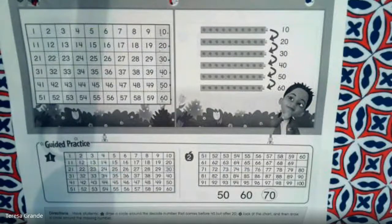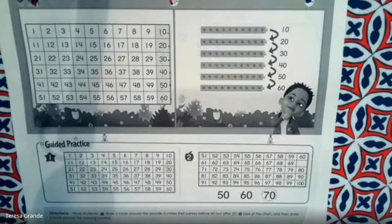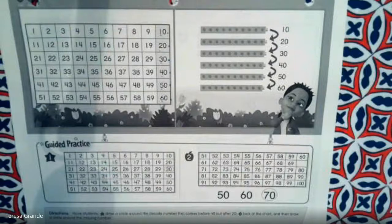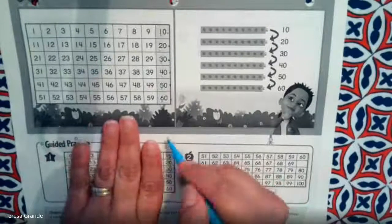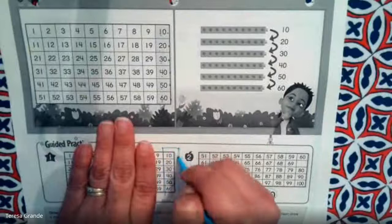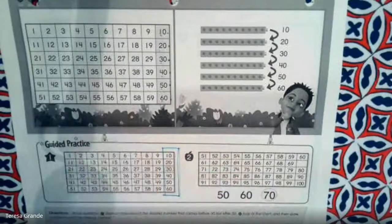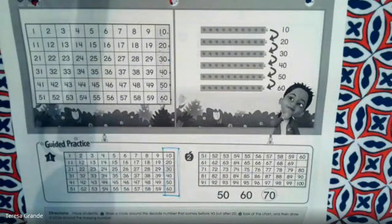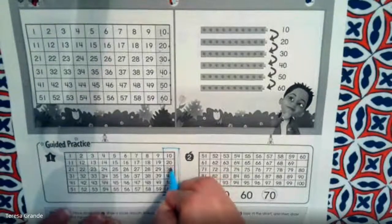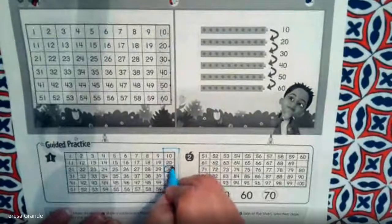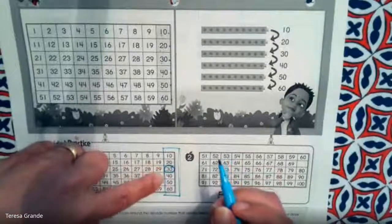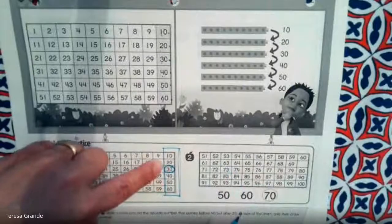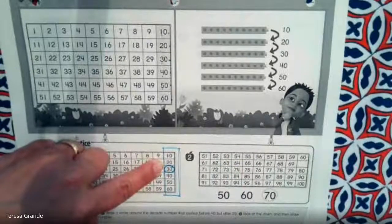So, the question I'm going to ask you first for number one is we need to find the number that comes before the number 40 but is after the number 20. So, we are just looking at this column right here. So, what number comes before the number 40 but after the number 20? Can anyone tell me that answer? That's right, it's the number 30. The number 30 comes before the number 40 and after the number 20 when we are counting by 10s.